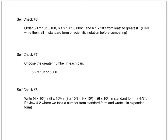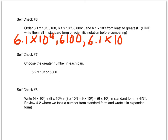Now let's try some on your own. In self-check number six, we're going to order some numbers from least to greatest. Here's a hint: you need to write them all in standard form or all in scientific notation before comparing them — it's your choice. The numbers are: 6.1 times 10 to the fourth power, 6,100, 6.1 times 10 to the negative fifth power, 0.0061, and 6.1 times 10 to the negative second power.